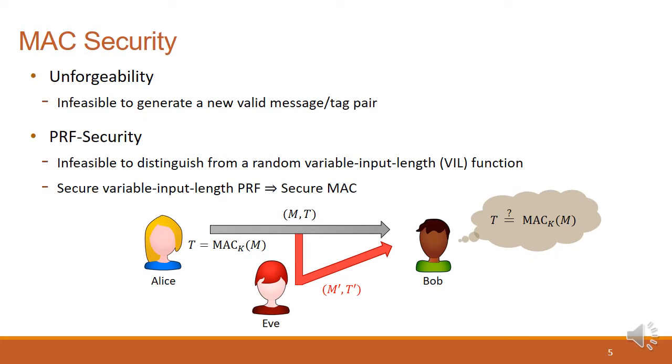To capture this situation, a MAC should have unforgeability to be secure. If a MAC has unforgeability, it is infeasible to generate a new valid message and tag pair, even after looking at sufficient number of valid samples. We also use another security notion called PRF security. To be PRF secure, it should be infeasible to distinguish from a random variable input length function. Since we can prove that a secure variable input length PRF has also unforgeability, PRF security is a stronger security notion than unforgeability. Therefore, if we want to prove the security of a MAC algorithm, it is enough to prove that the algorithm is actually a secure PRF.